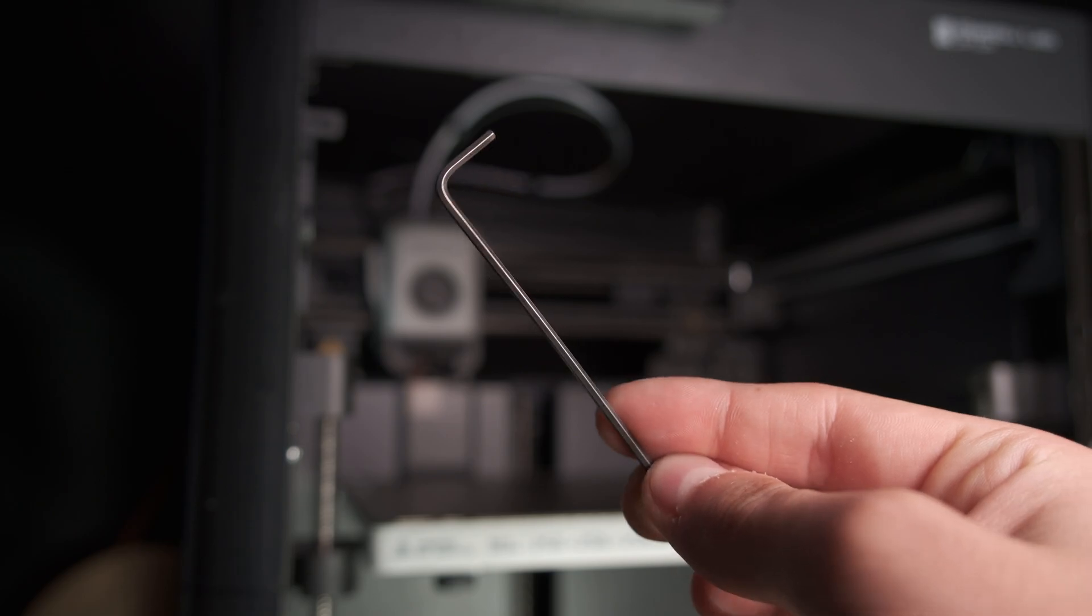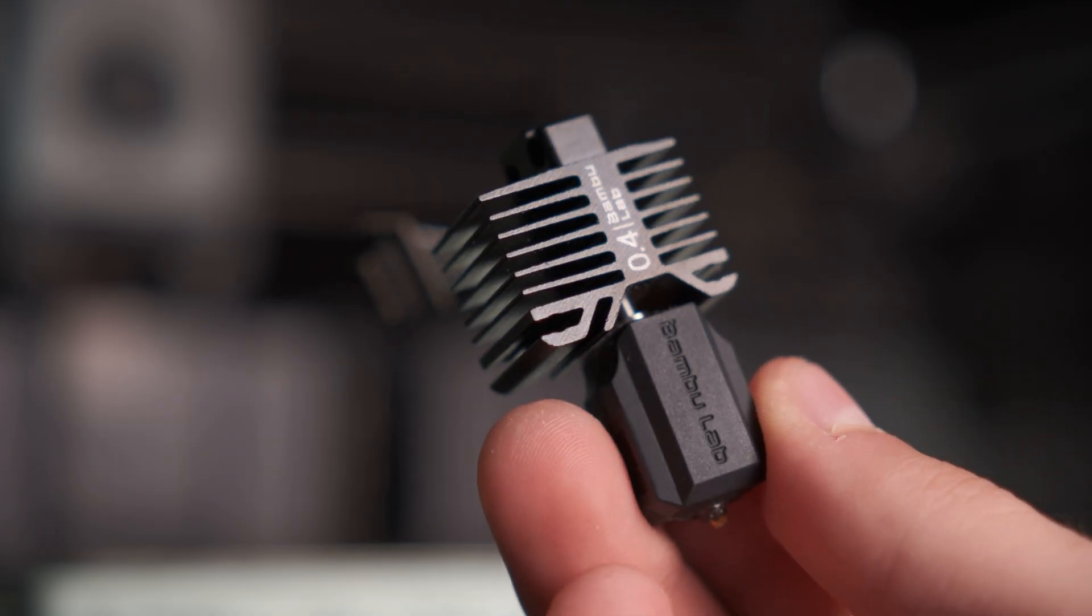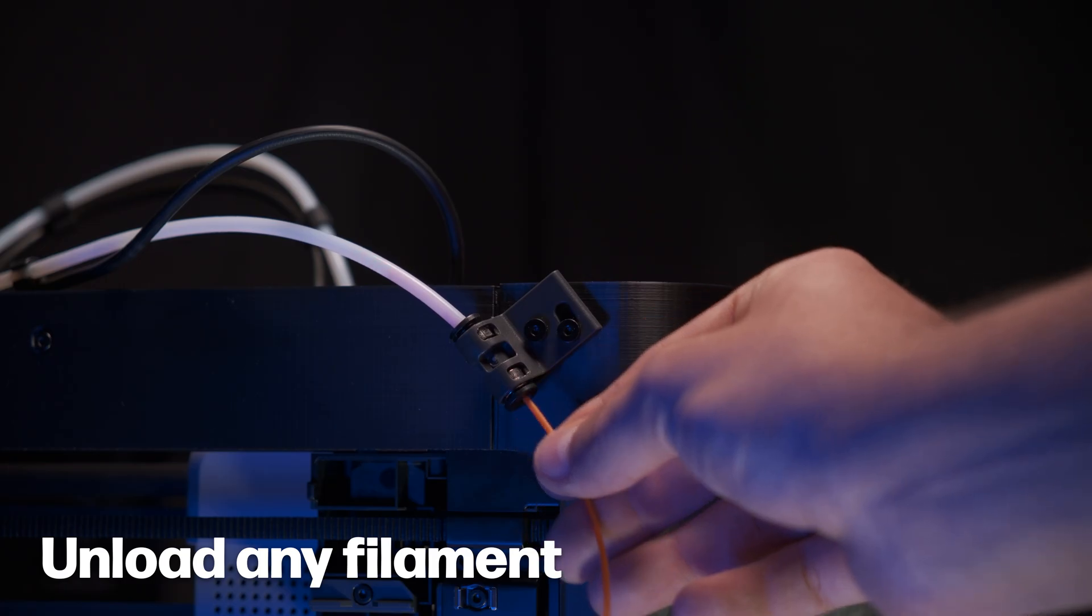You'll also need a 2mm hex key to remove the stock hotend from your Bamboo Labs machine. First, remove any filament from the extruder.